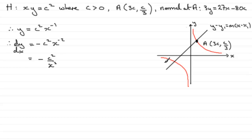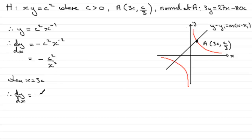So we've got dY by dX. We now want to find the gradient of the tangent at A, that's when X equals 3C. When X equals 3C, we substitute into our expression: we get minus C squared over 3C all squared, so that's 9C squared. Cancelling the C squareds, we end up with a gradient of the tangent equal to minus 1 ninth.